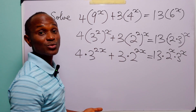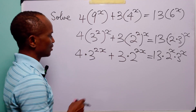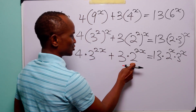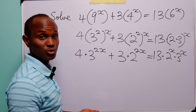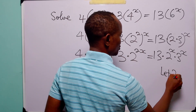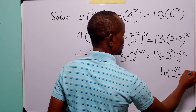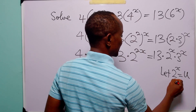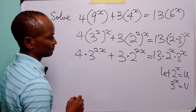Now you can see that we have two different bases — base 3 and base 2. So what we are going to do is let 2 to power x be equal to u, while 3 to power x is equal to v.